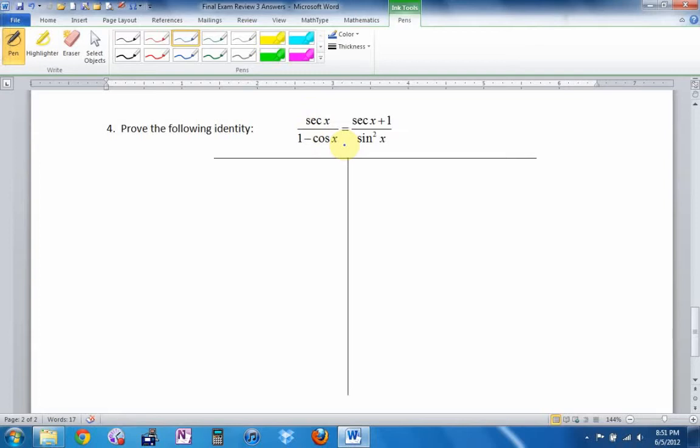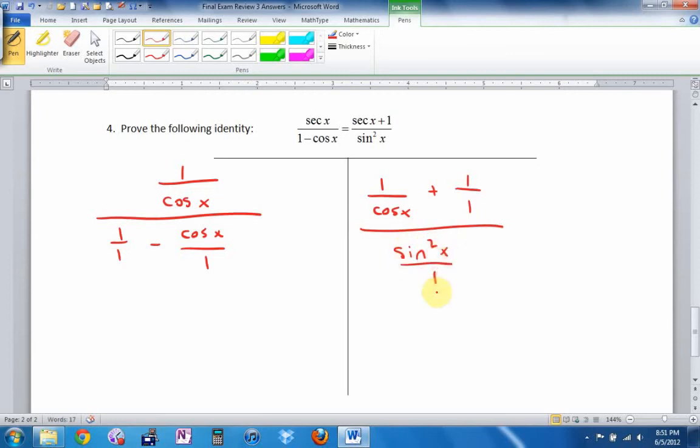Rewrite everything in terms of sine and cosine. Okay. Secant is 1/cosine. And now that I have one fraction, I want everything to be a fraction. Secant is 1/cosine. And since I have one fraction, I want everything to be a fraction.